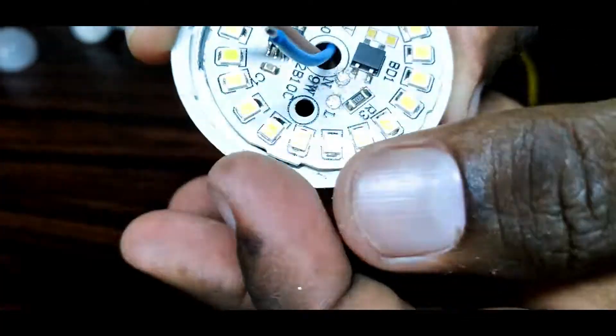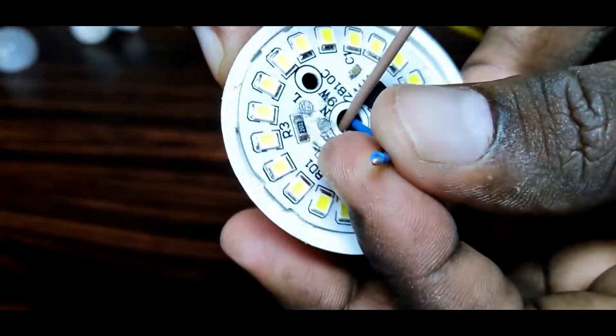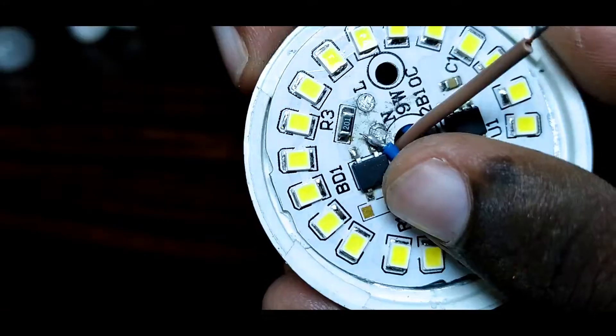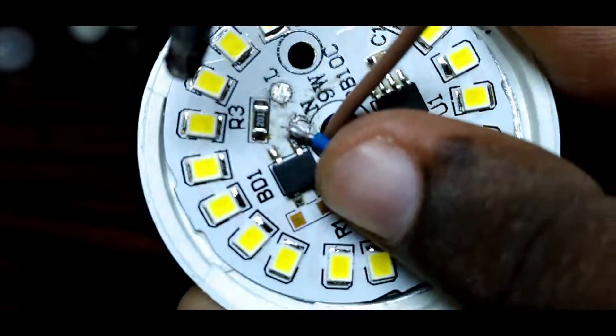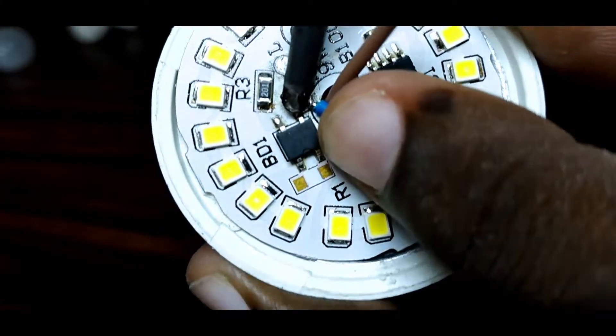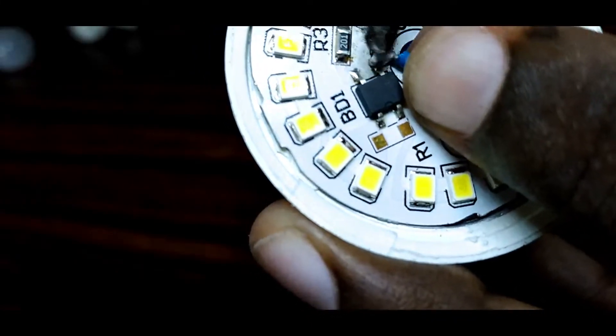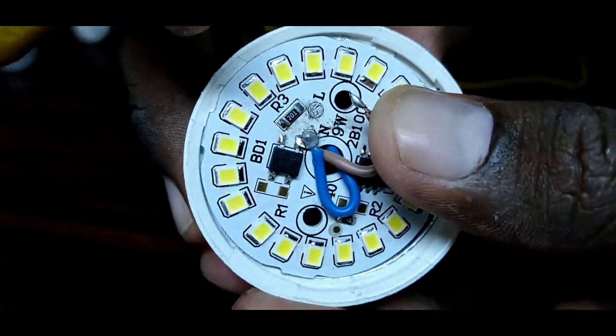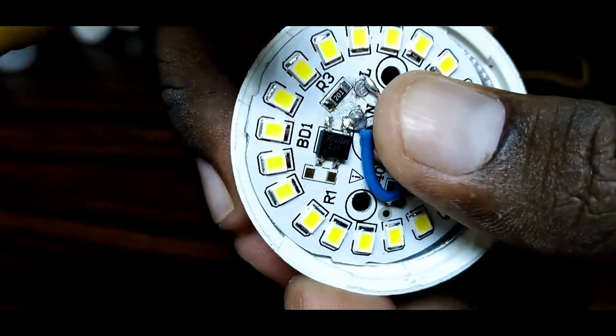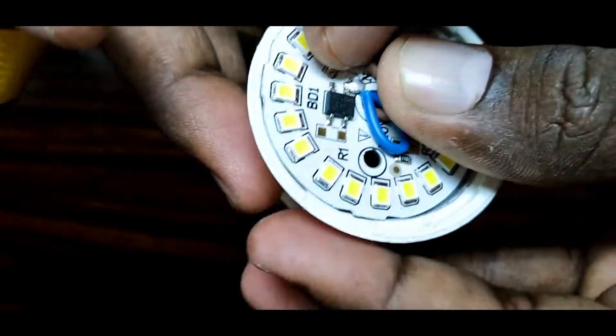Now we need to solder the two wires. We need to solder the panel and solder the wire. We need to solder the wire in a neutral part. It will be soldered in one portion.